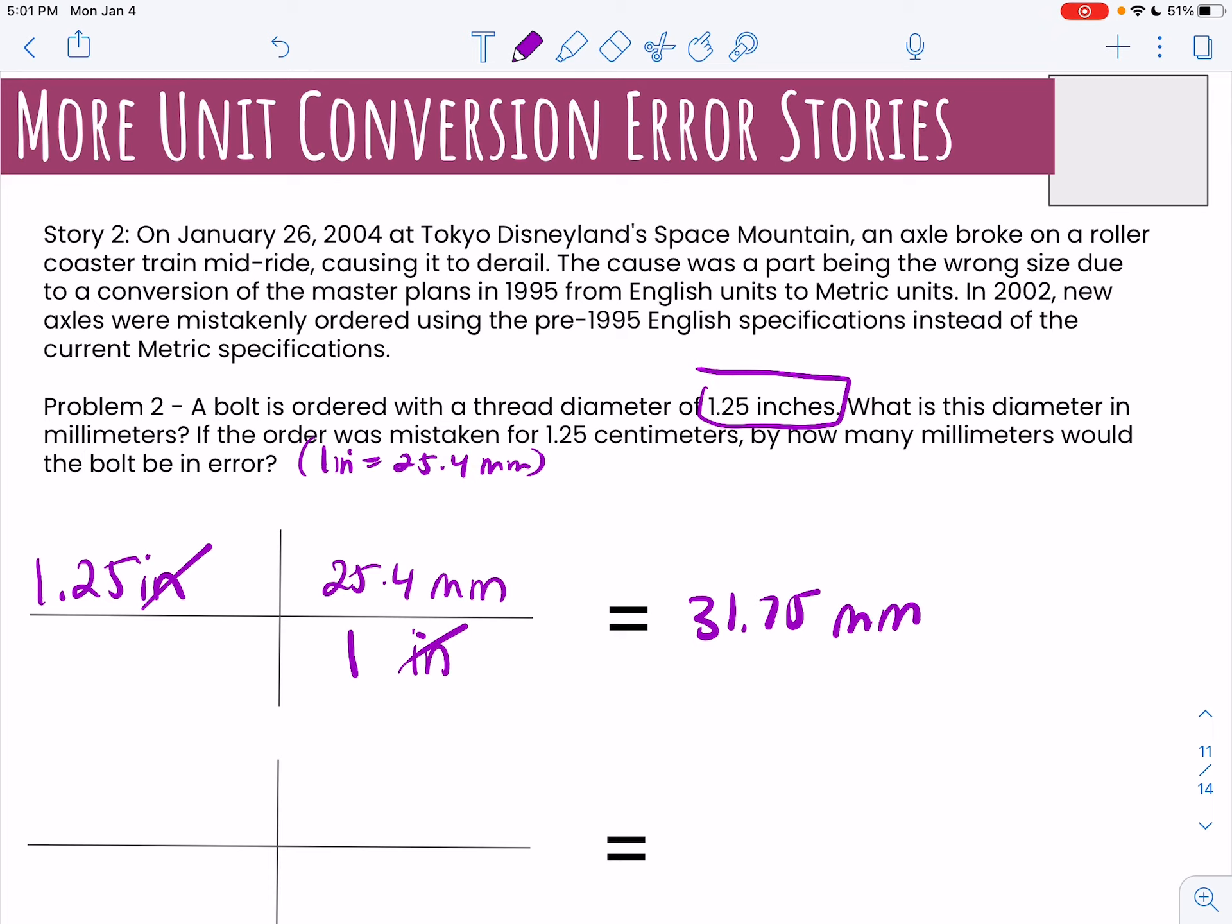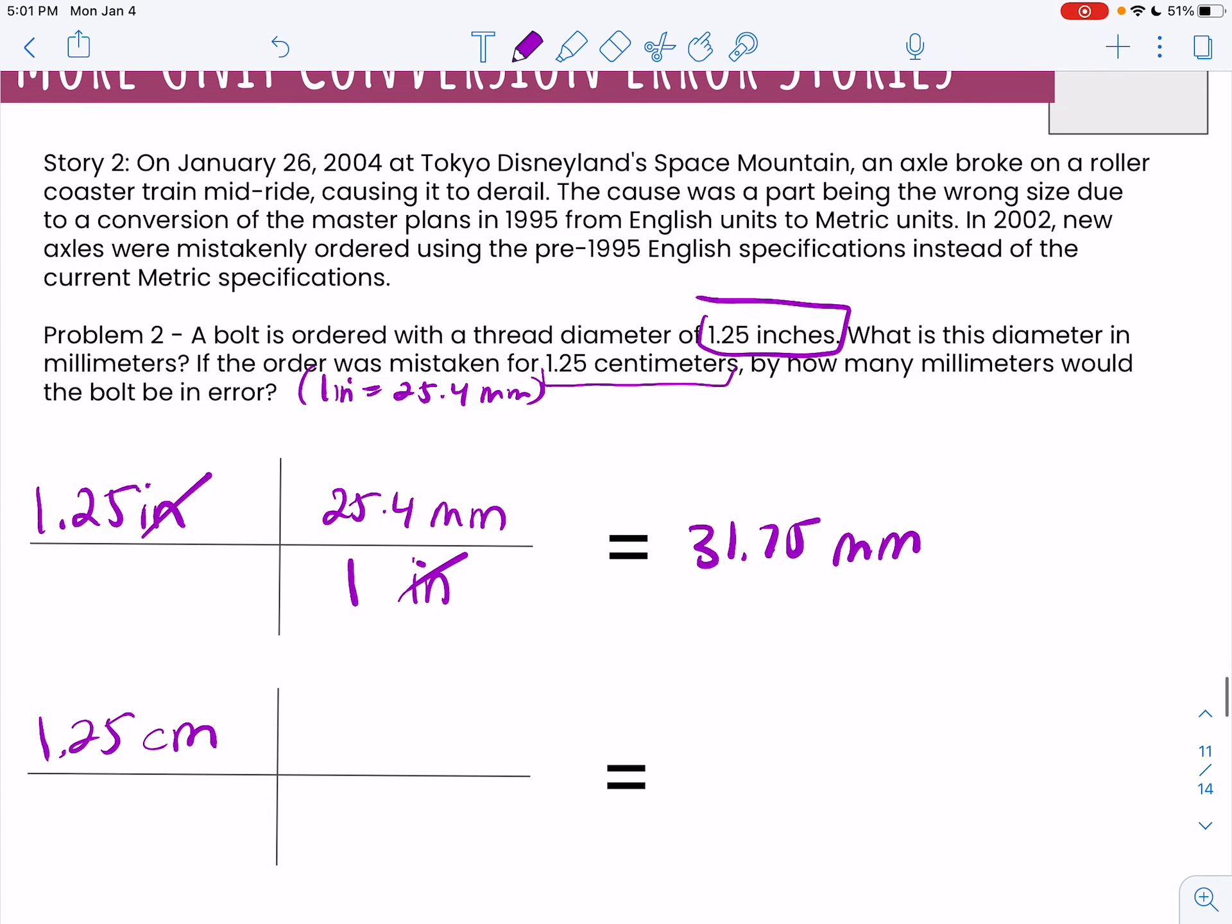And they're saying if the order was mistaken to be 1.25 centimeters, so here again we're going to start instead of inches, we're going to assume that they decided centimeters. And then one centimeter has 10 millimeters in it, right? If you think about a ruler, the little tiny marks are millimeters and then the numbers are centimeters. So 1.25 times 10 is 12.5 millimeters. As you can see, that's off by quite a lot. You can see why that's going to cause a problem.